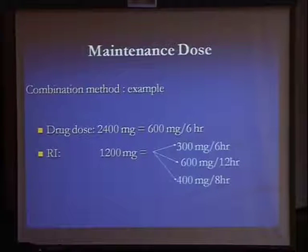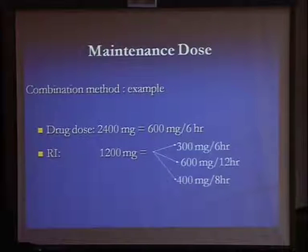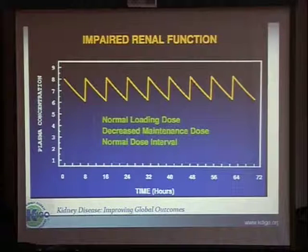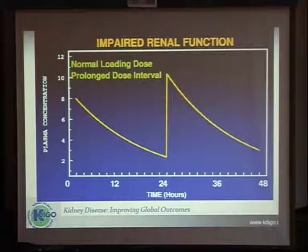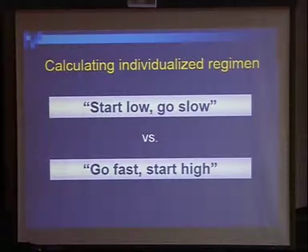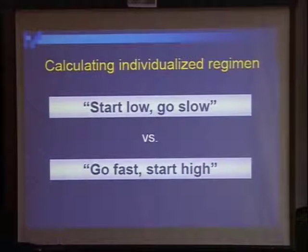Which strategy to choose? A reasonable approach is to start by increasing the duration until you reach 24 hours, then start to reduce the drug dose. Keeping the dose will allow for a steady-state concentration but carries an increased risk of toxicity, whereas increasing the duration reduces the risk of toxicity but can result in sub-therapeutic drug levels. The decision is individualized — it depends on whether the patient is in the ICU and you are in a hurry, or whether this is an elective case where you can start low and go slow.